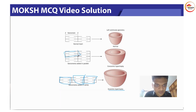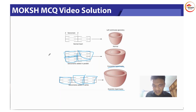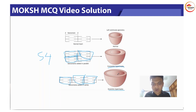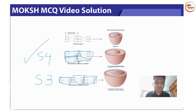In concentric hypertrophy, fibers are added in parallel — on top of the same fiber, another fiber is added side by side. This results in a thick wall. We hear S4 in a thick ventricle, which is concentric hypertrophy. In contrast, eccentric hypertrophy gives a dilated ventricle with a normal wall thickness but a larger cavity — and that is where we hear S3.